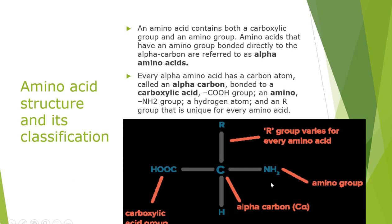Amino acids are essentially alpha amino acids. When R is not H, the alpha carbon becomes asymmetric — where asymmetric means the two sides cannot be equally divided. You cannot cut it into equal parts. This asymmetric carbon gives rise to isomers.